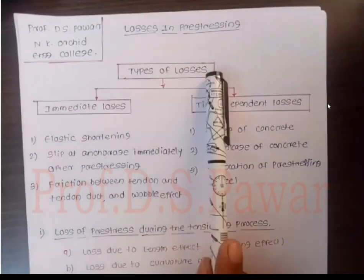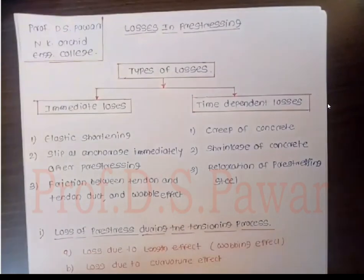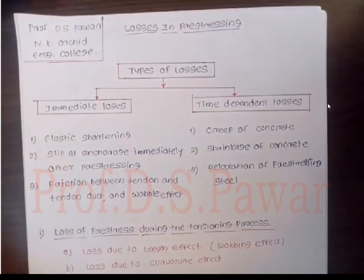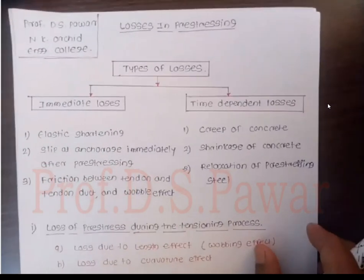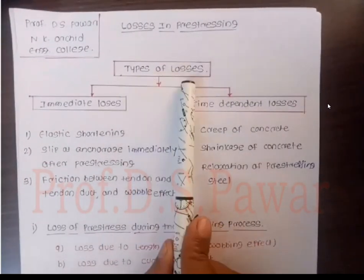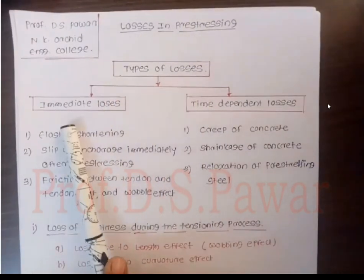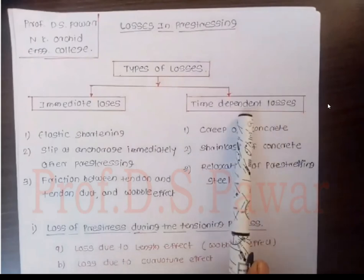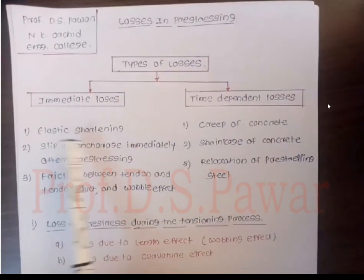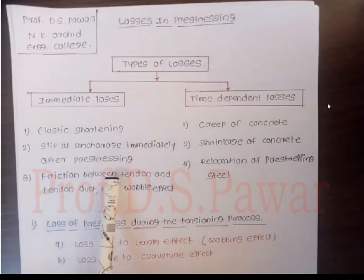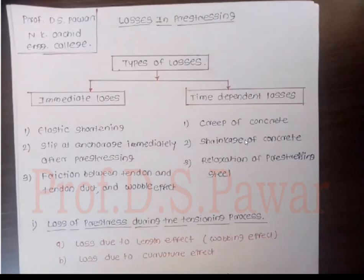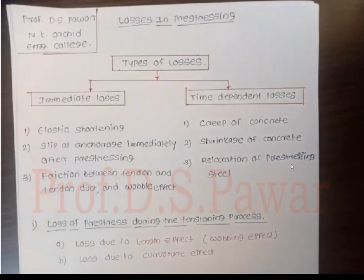Now I hope that you people understood the introduction part of the losses — why we have to consider the losses in the pre-stressing process. So after that, I am going to tell you what are the various types of losses. Types of losses: first is immediate losses, and second is time-dependent losses. Immediate losses include elastic shortening, slip at anchorage immediately after pre-stressing, friction between the tendon and the tendon duct, and the oval effect. Time-dependent losses include creep of concrete, shrinkage of concrete, and relaxation of pre-stressing steel.